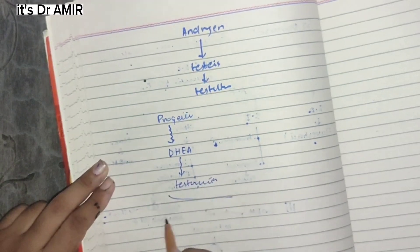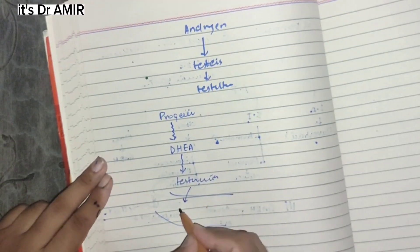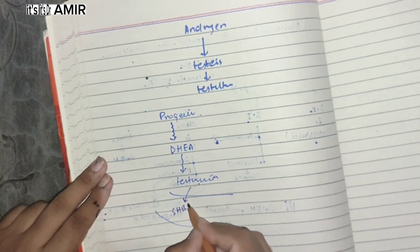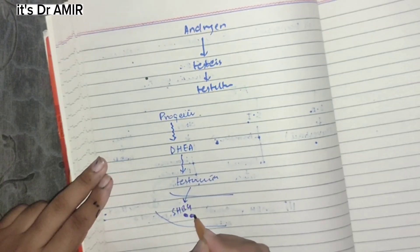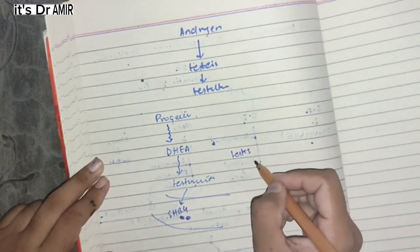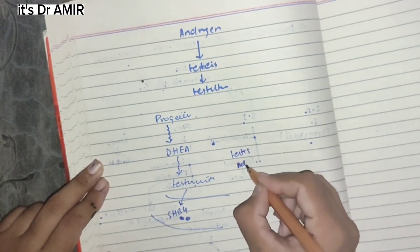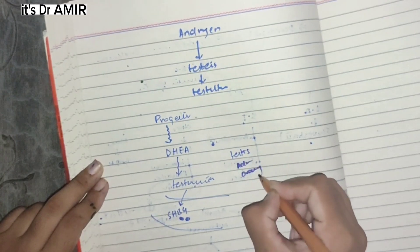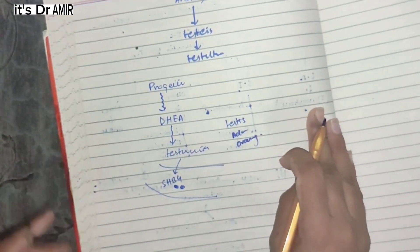What does testosterone do with plasma? It binds with sex hormone binding globulin (SHBG) and travels. Where is the synthesis? It's synthesized in the testes in males, in the adrenal gland, and also produced in the ovary, though not as much in the ovary.